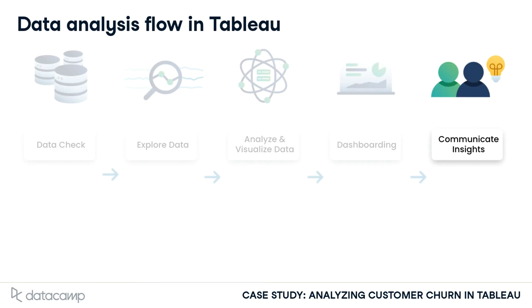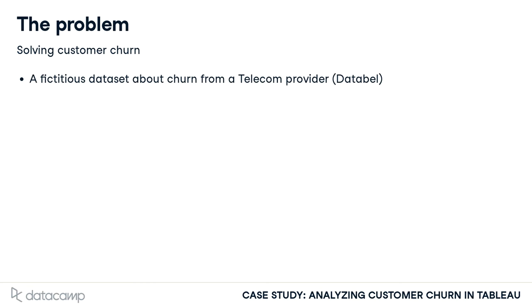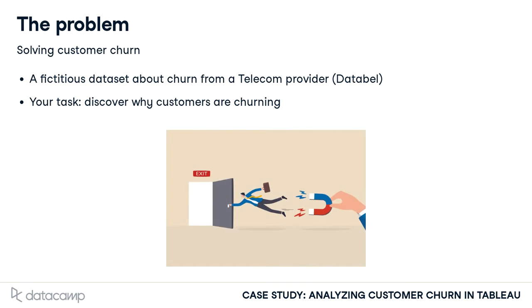The final step is to communicate your insights with stakeholders. The problem you will be working on in this course is around customer churn. You'll be working with a fictitious churn dataset from a telecom provider called Databell. You are hired as a consultant, and your task is to discover why customers are churning, or in other words, leave Databell.